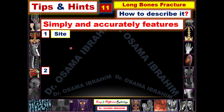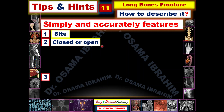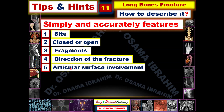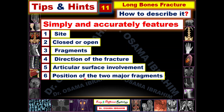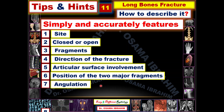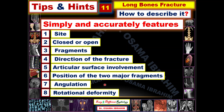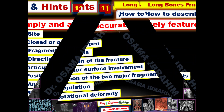The first issue is the site. Second, closed or open. Third, fragments. Number four, direction of the fracture. Number five, articular surface involvement or not. Number six, position of the two major fragments. Number seven, angulation. And at the end, rotational deformity. These are the main eight items that should be described when you face fractures in the X-ray examination.